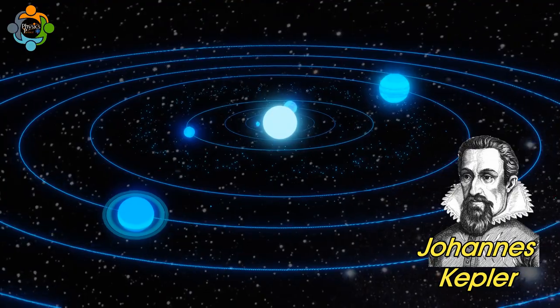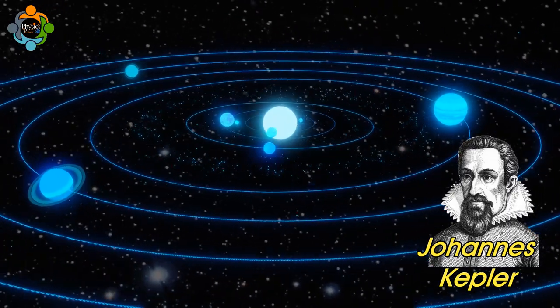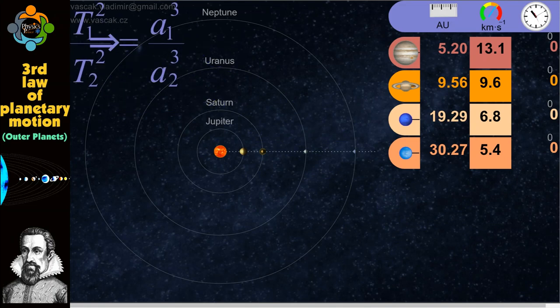According to this law, the square of the orbital period of a planet is directly proportional to the cube of the semi-major axis of its orbit. In simpler terms, it relates the time it takes for a planet to orbit the sun to its average distance from the sun.